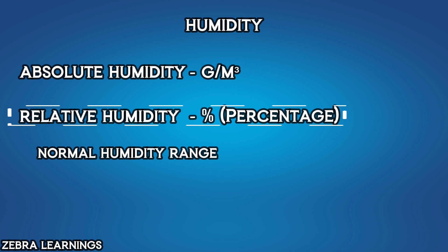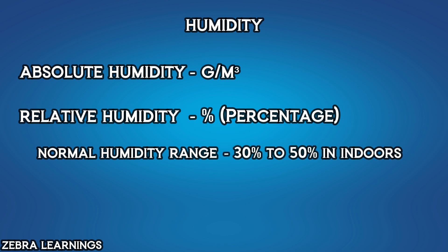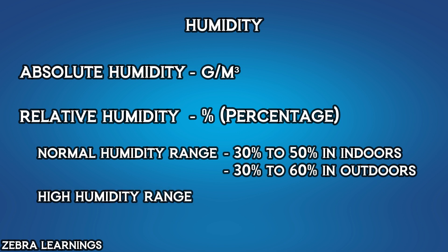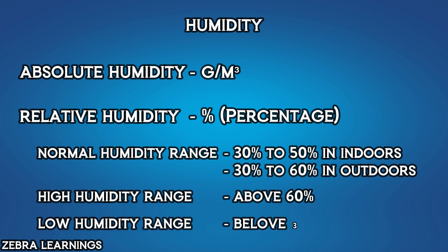Normal humidity levels typically range from 30% to 50% indoors and 30% to 60% outdoors. High humidity levels are considered to be above 60%, while low humidity levels are below 30%.